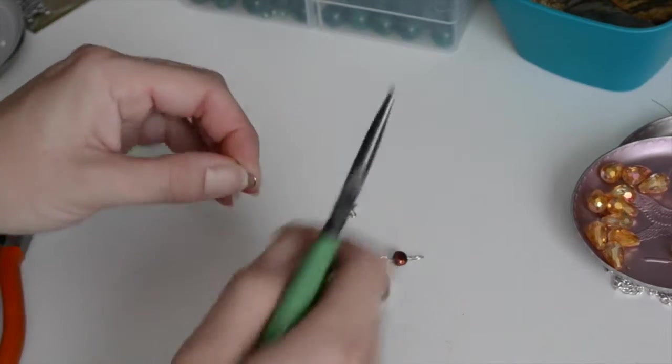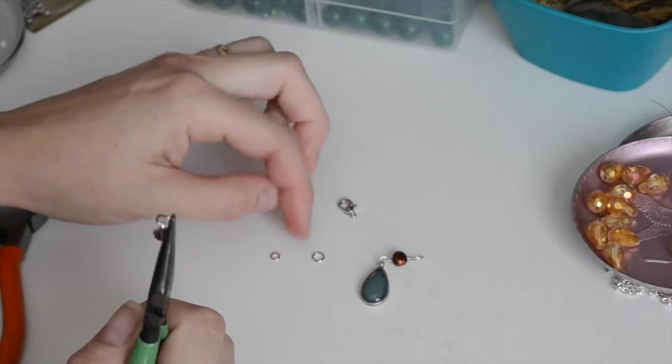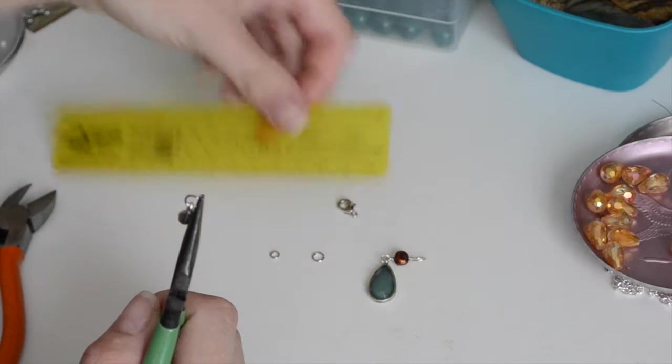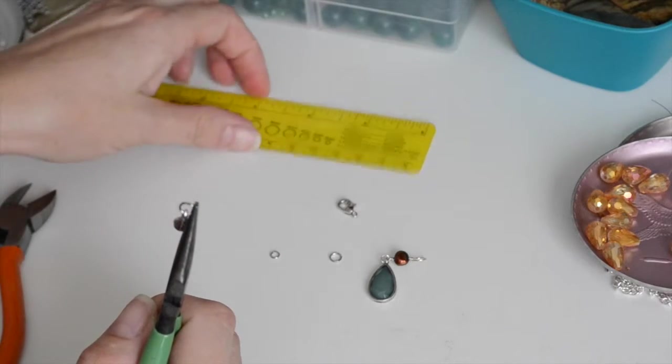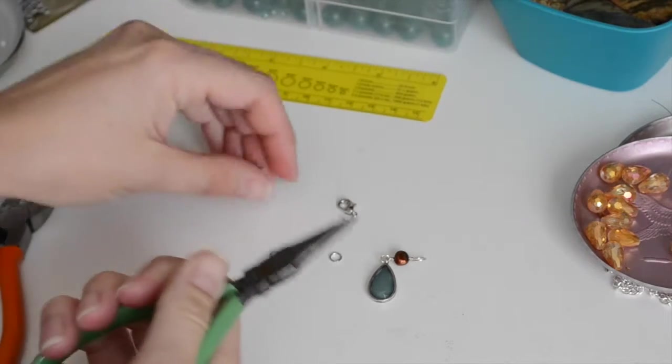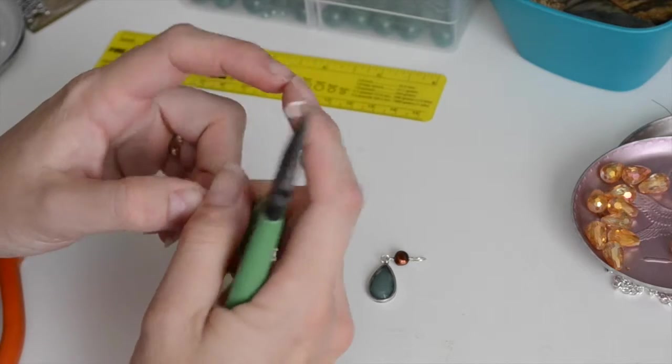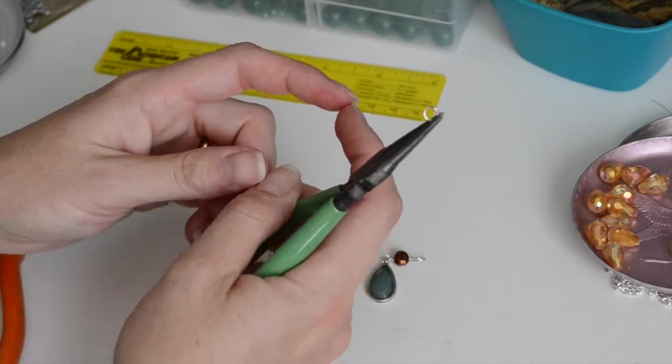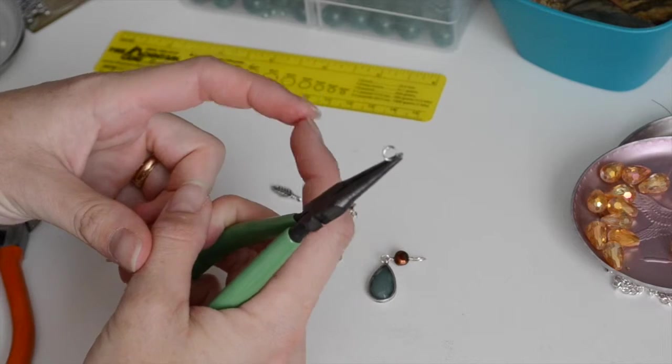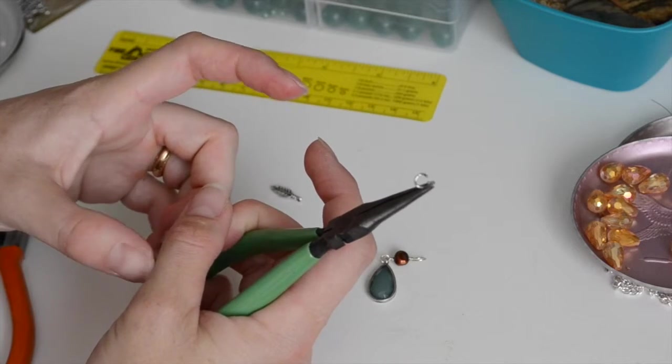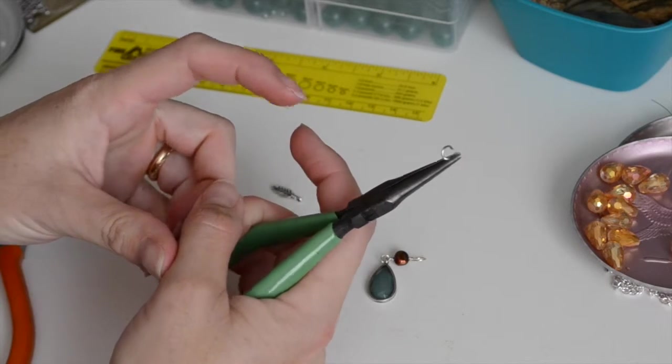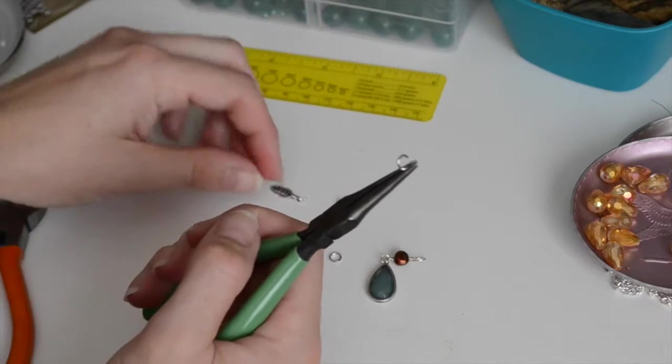So we're going to get a hold of one of the five millimeter jump rings. There should be two in your kit. And we're going to open it up in a sweeping motion. Do not open your jump rings away from each other like this when you open up the circle. They'll never go back together, right? And it creates a weak point down here at the bottom where they've come apart. So if you open your jump ring in a sweeping motion, put it back together in a sweeping motion, your jewelry is just going to last longer.